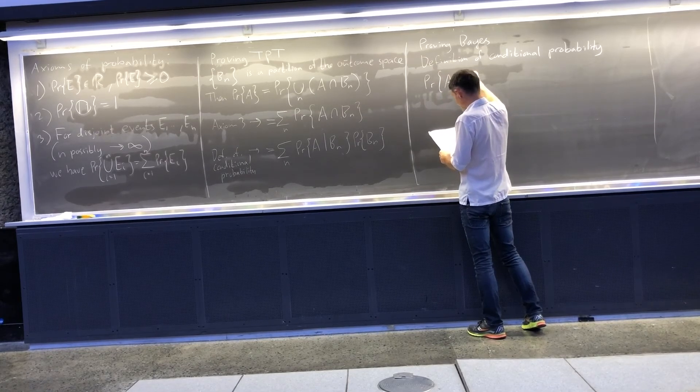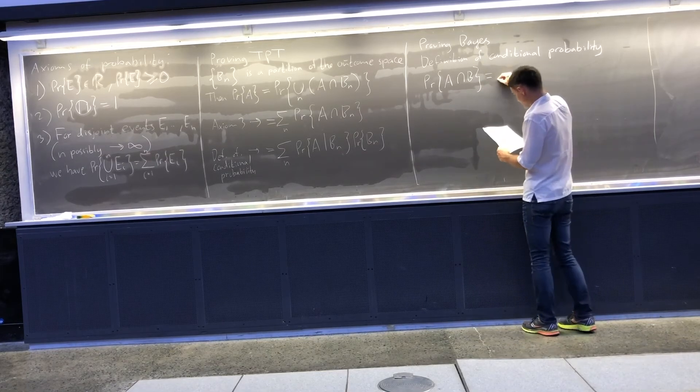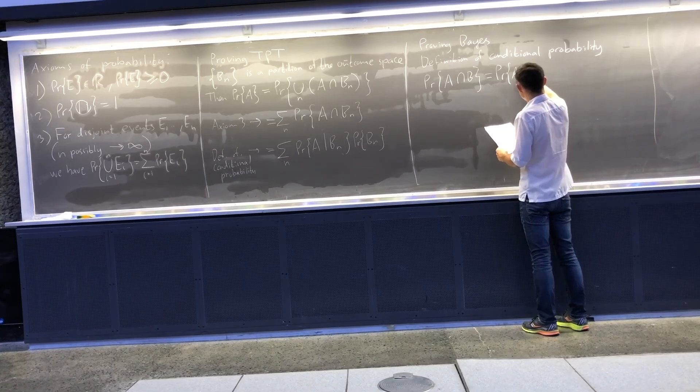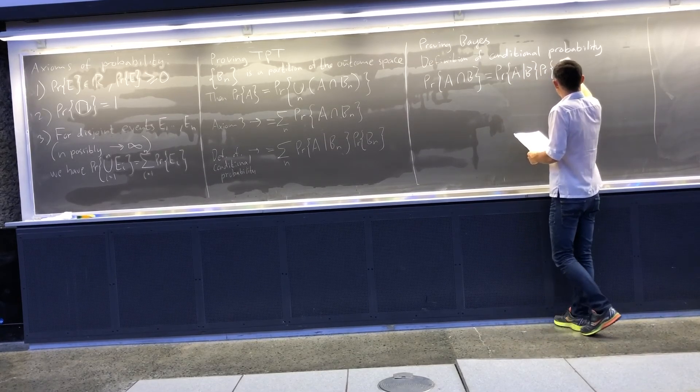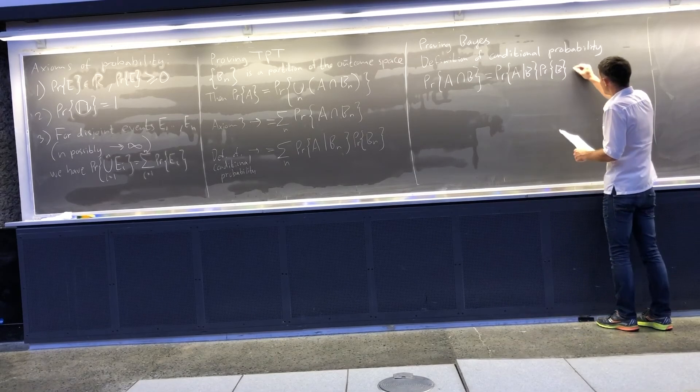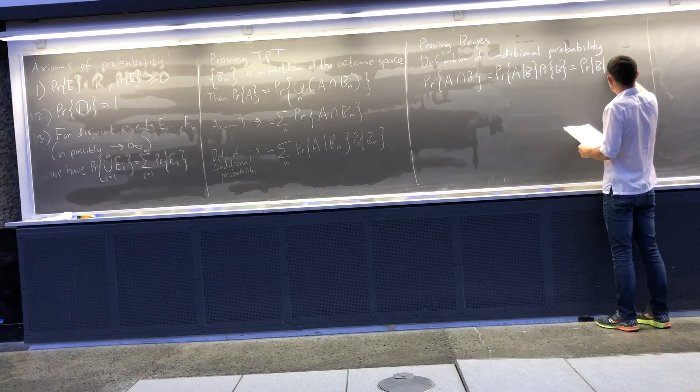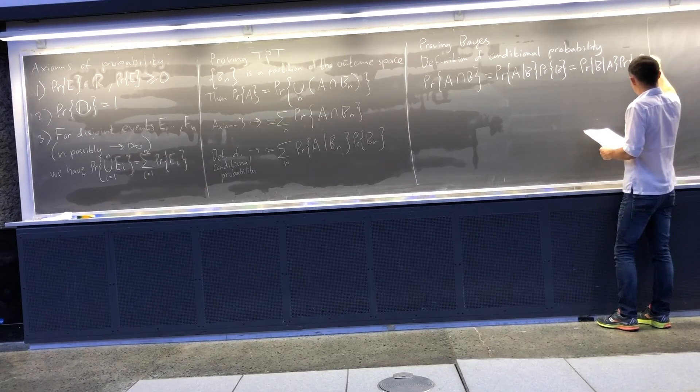We have this A intersection B. It can be written in two different possible ways. One way of writing it in terms of conditional probability is A given B times probability of B. The other way is probability of B given A times probability of A.